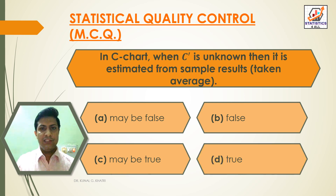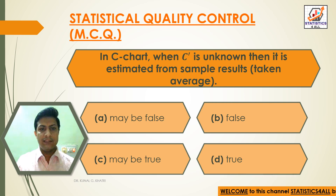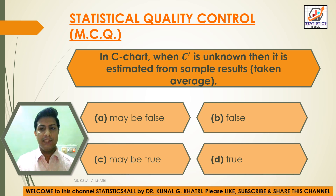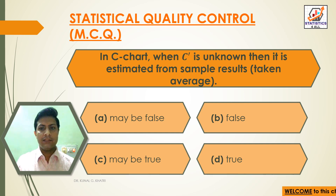Next question: in C chart, when C dash is unknown, then it is estimated from sample results — that is, taken as average. Option A: may be false, Option B: false, Option C: may be true, Option D: true. Answer: Option D — true. In C chart, when C dash is unknown, then it is estimated from sample results by taking the average.